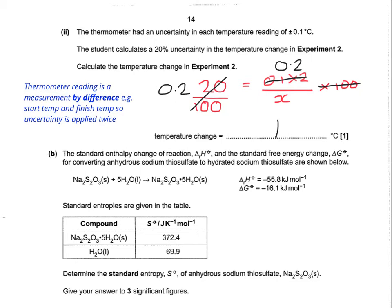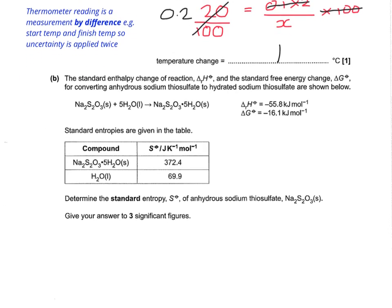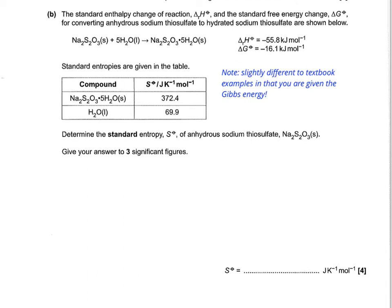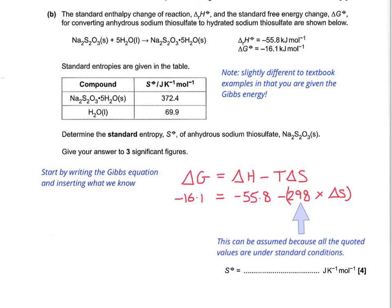So let's move the page down and do the entropy part. So, it says the standard enthalpy of reaction and the standard free energy change delta G for converting anhydrous sodium thiosulfate to hydrated sodium thiosulfate are shown below. So you get given delta G. So it's worth noting that this is actually slightly different to what you might be used to in textbooks because you're given the Gibbs energy this time around. So let's start by writing down the Gibbs equation because then we can start putting in what we know. So although they don't give you the temperature, you can assume it's 298 Kelvin because all the quoted values are under standard conditions. If you look at the little symbol next to S, for example, or the symbol next to G or the symbol next to H. That means it's standard conditions.